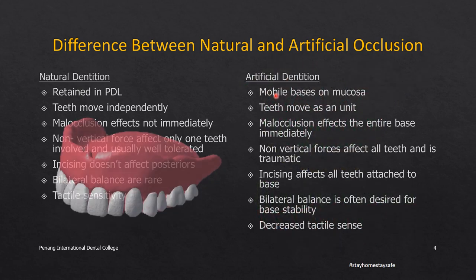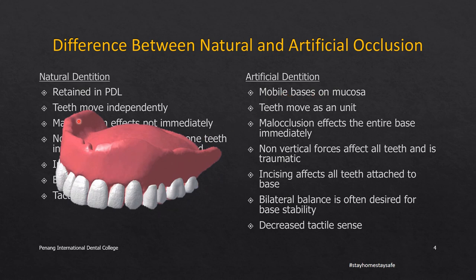In contrast, denture teeth are anchored to mobile bases on the mucosa. The teeth do not move independently; they are not anchored into the alveolar socket like natural teeth. Therefore, the teeth move as a unit, and malocclusion will affect the stability of the entire denture. Non-vertical forces will affect all the teeth and may result in trauma to the underlying soft tissue. Bilateral balanced occlusion is therefore required for the stability of complete dentures. There is also no or decreased tactile sensibility, as sensitivity is only confined to sensory feedback from the mucosa.